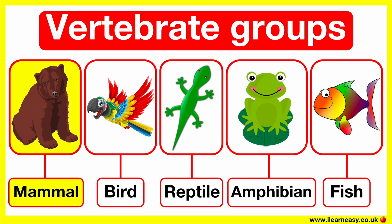Mammals have body hair or fur. They use their lungs to breathe. Mammals are born live and they drink milk. A mammal's body temperature is usually stable; therefore, they are warm-blooded animals.